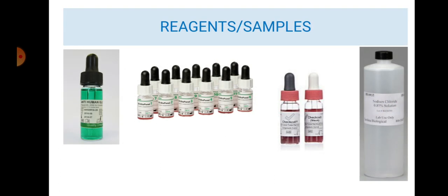The reagents and samples are as follows: anti-human globulin reagent, screening cells 1 and 2 (SC1, SC2), panel cells 1 to 11 labeled as ABC1 to ABC11, Coombs check cells, and normal saline solution at 0.85% to 0.9% sodium chloride, which can be placed in a wash bottle.